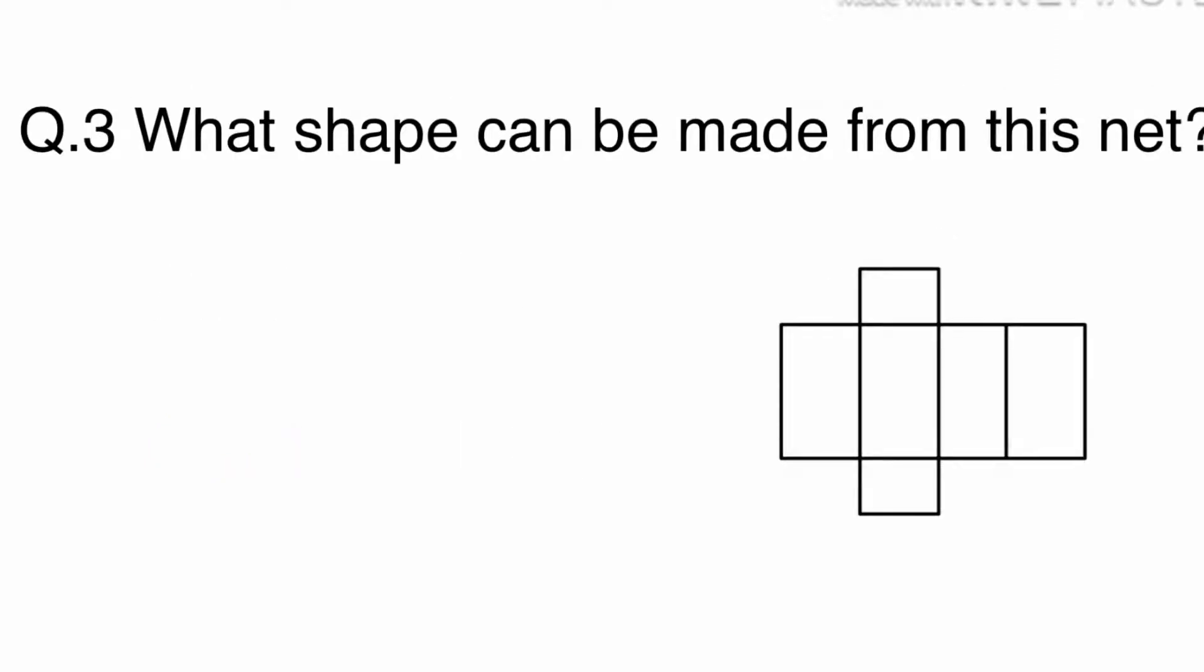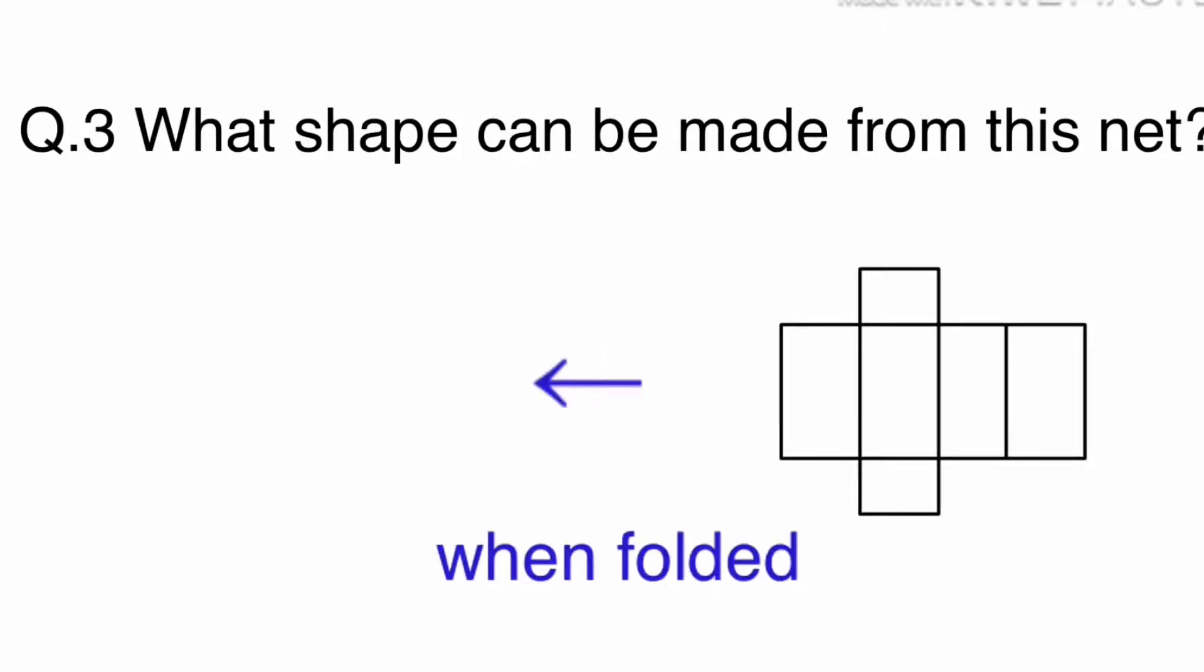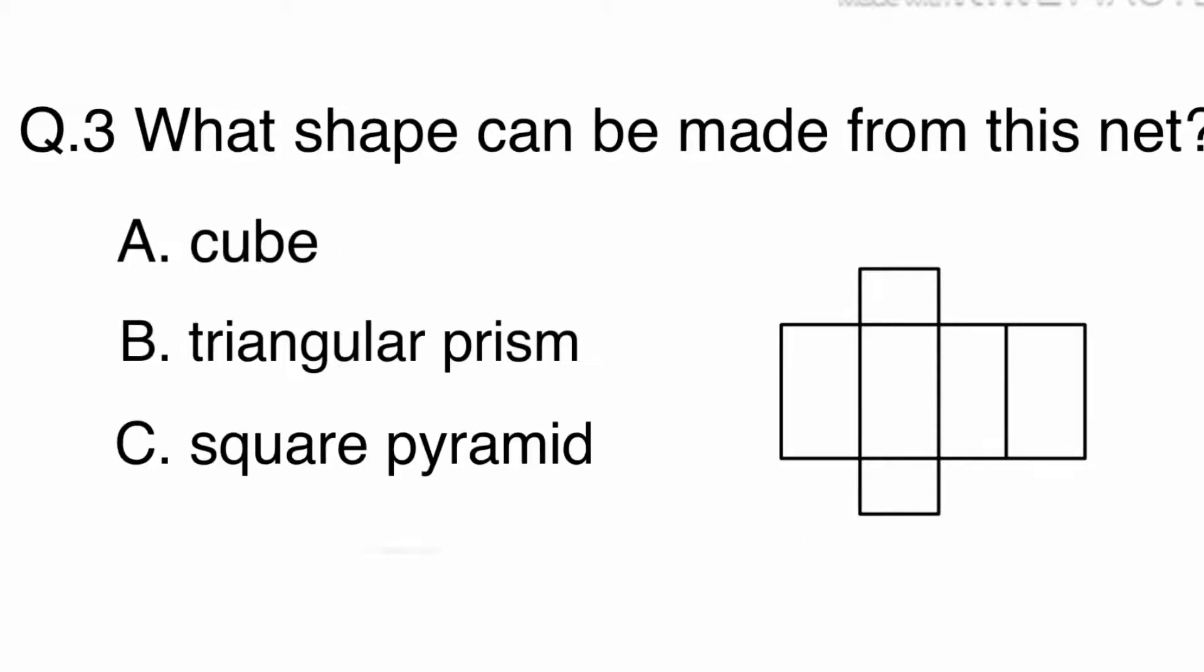Question 3. What shape can be made from this net? A. Cube, B. Triangular prism, C. Square pyramid, or D. Rectangular prism. When folded, the net will make a rectangular prism. The answer is D. Rectangular prism.